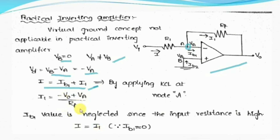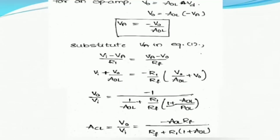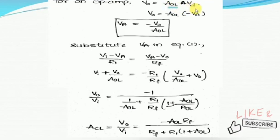We know I1 equals (Va minus V0) by Rf. From the circuit, I equals (Vi minus Va) by R1. Since I equals I1, we equate: (Vi minus Va) by R1 equals (Va minus V0) by Rf. The unknown here is Va. From the basic definition of op-amp, the output voltage V0 equals AOL times Vd, and since Vd equals minus Va, we get V0 equals AOL times (minus Va). Therefore, Va equals minus V0 by AOL.